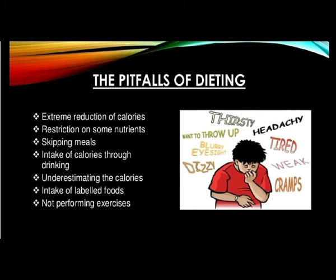There are seven major pitfalls of dieting. The first is extreme reduction of calories — if you reduce calorie intake too drastically, it will lower your metabolism and body weight will not reduce in a healthy manner, which can be dangerous. The second pitfall is restriction of some nutrients: carbohydrates and fats are often restricted, but your body needs all types of nutrients; without them, proper body functioning is hampered. The third pitfall is skipping meals — if you have a good metabolic rate you can maintain or lose weight, but skipping meals works against your weight loss plan, as you consume more calories in the next meal.